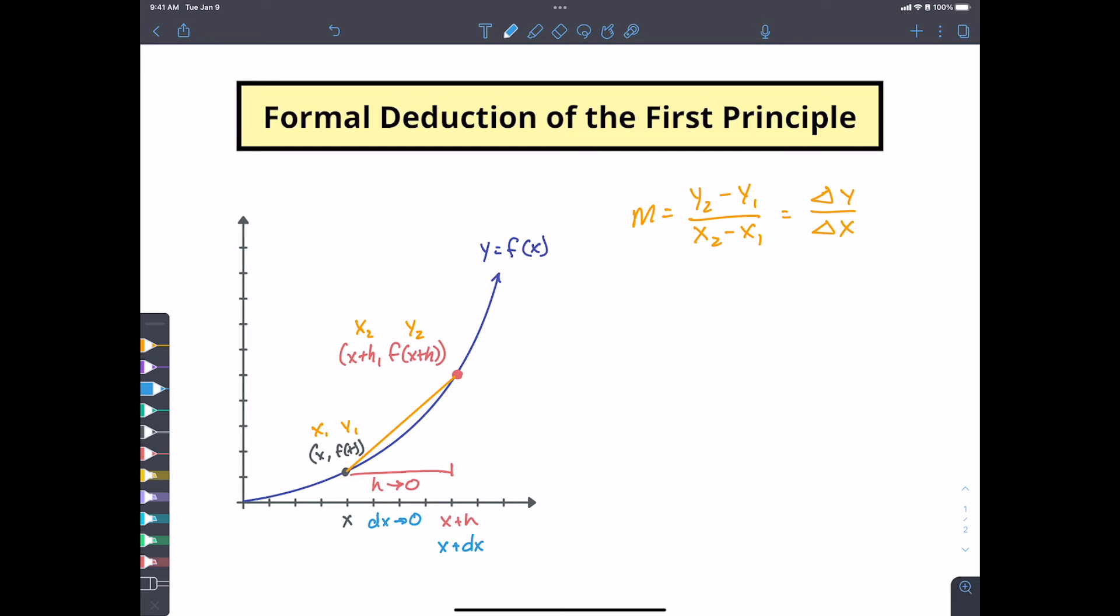So we use this notation of dy over dx. dy being this distance right here, here's our change in y, our infinitely small change in y. Here is dx, our infinitely small change in x.